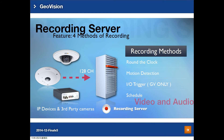There are four types of recording modes for the Recording Server. First is round-the-clock recording for 24 hours. Second is motion detection recording. Third is I/O trigger recording, which only supports GV IP devices. Fourth is schedule mode, where customers can choose when to record round-the-clock and when to use motion detection or I/O trigger.